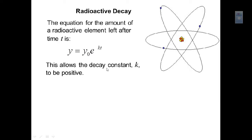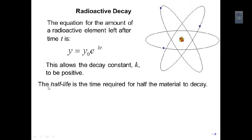This allows the decay constant k to be kept positive. The half-life is the time required for half the material to decay. For example, if something has a half-life of two weeks and you start with five grams, in two weeks you'll have two and a half grams. The half-life is the amount of time required for half the material to decay off.